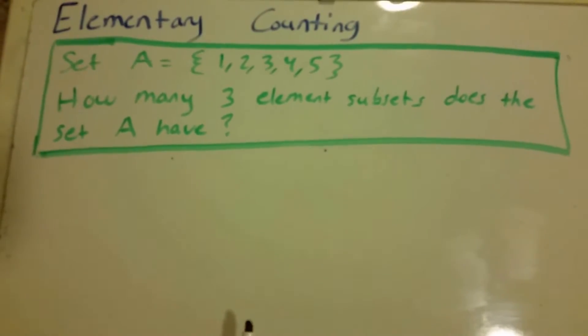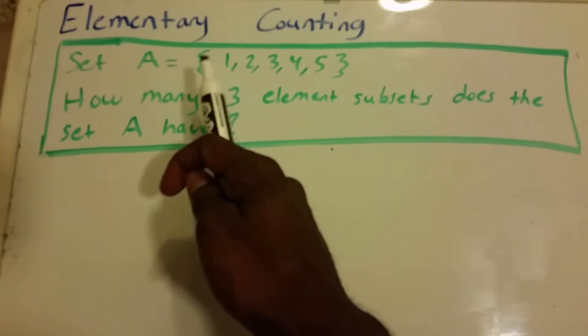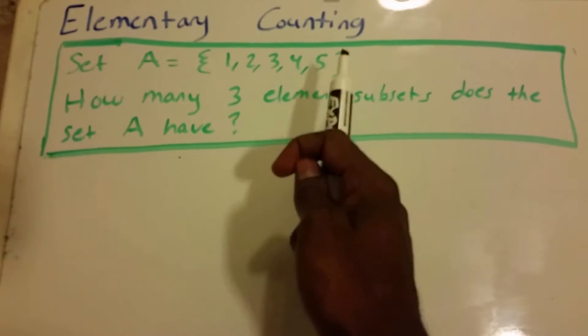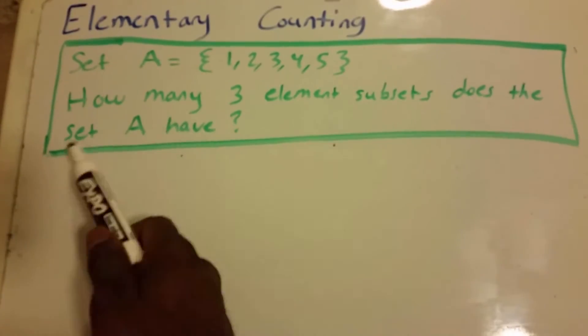Hey YouTube, this is a video on elementary counting. So what we have here is set A, and it contains the elements 1, 2, 3, 4, and 5. And we want to know how many three element subsets does the set A have.